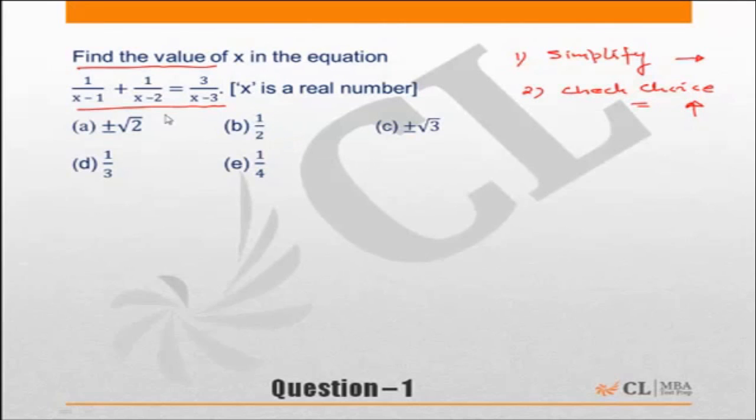Okay, so let us write down the equation and start solving it. The equation is 1 upon x minus 1 plus 1 upon x minus 2 is equal to 3 upon x minus 3.